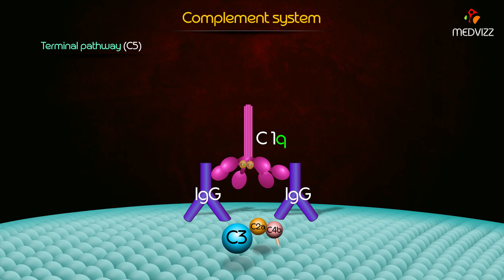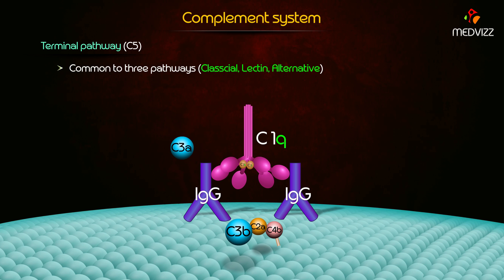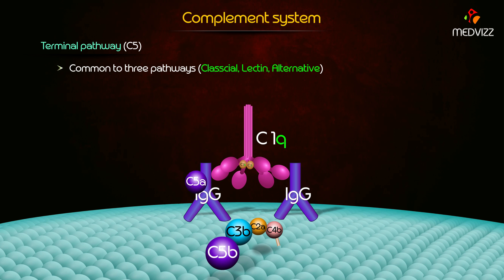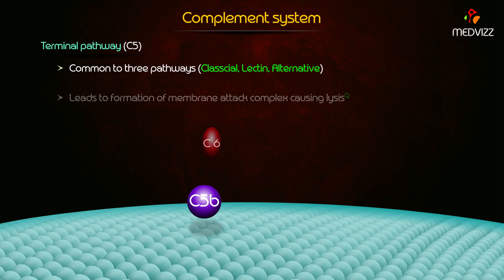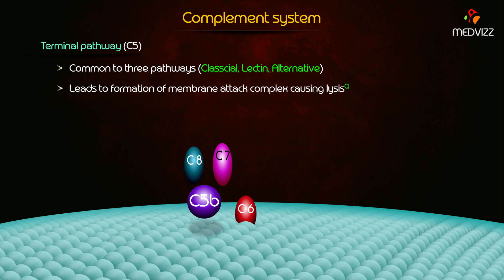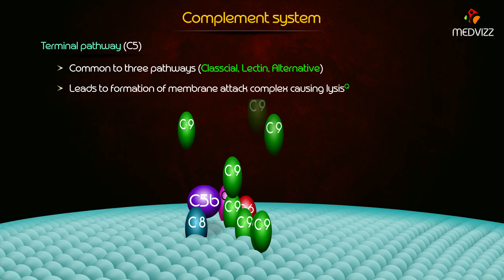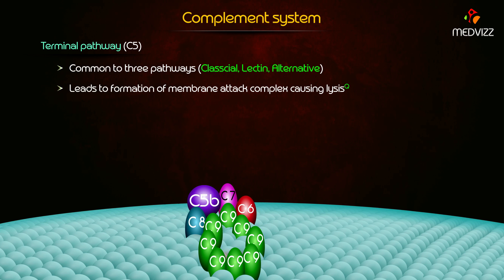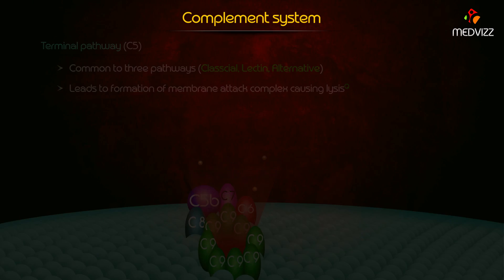The terminal pathway involves the C5 complement system and is common to all three pathways — lectin, classical, and alternative. It leads to the formation of the final membrane attack complex, causing lysis.